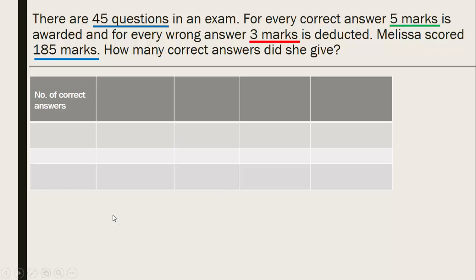So first, number of correct answers. We are going to first assume that, okay, what could be the number of correct answers Melissa could have given. Let's assume that she answered every question correctly. So the total number of correct answers that you see here would be 45. And marks awarded for each question is 5. She's got 45 correct answers, which means 45 times 5 is 225. So she would have got the full marks, which is 225.